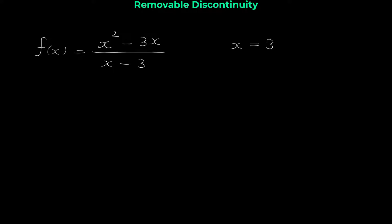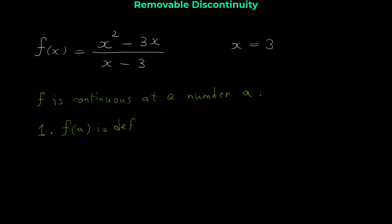Before I show you the solution, let me remind you the three-step definition of continuity of a function at a point. In general, a function f is continuous at a number a if, first of all, a is in the domain of f — meaning f(a) is defined. This is the first condition for continuity of a function at a point.